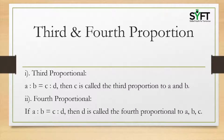Third and fourth proportion. What is third proportion? If a is to b equal to c to d, then c is called the third proportion to a and b. What is fourth proportion? If a is to b equal to c to d, then d is called the fourth proportional to a, b and c.